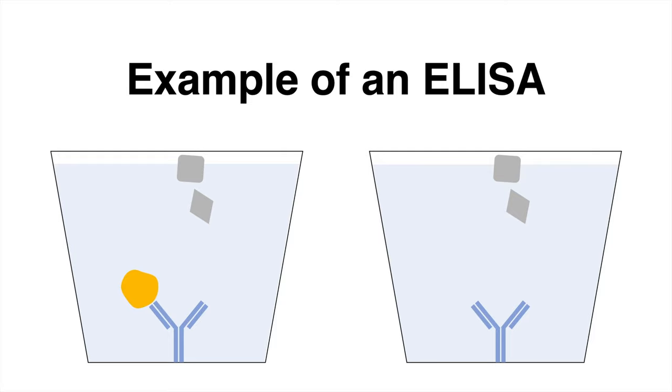Now we provide the enzyme-linked antibody. It will bind our antigen in the left well and remains bound after washing, whereas the antibody is discarded in the control.